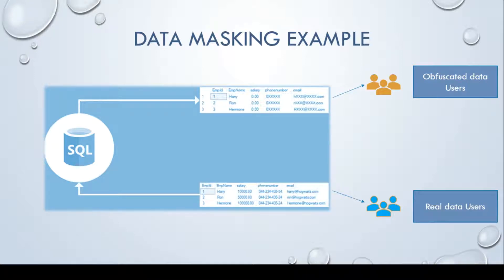As we discussed this example, we saw two sets of users. One is the obfuscated data users and the other set is real data users. As masking policies are applied on the roles on Snowflake, we will create different roles for obfuscated data users and real data users.